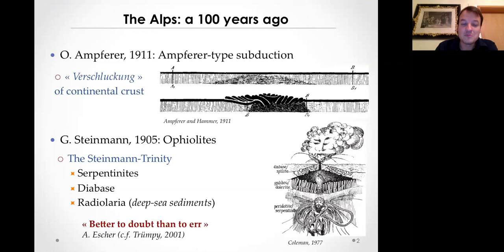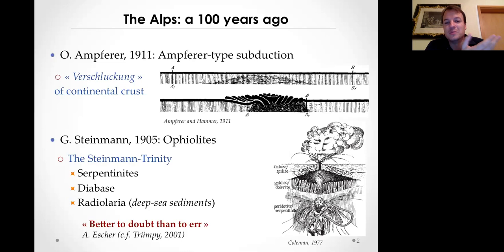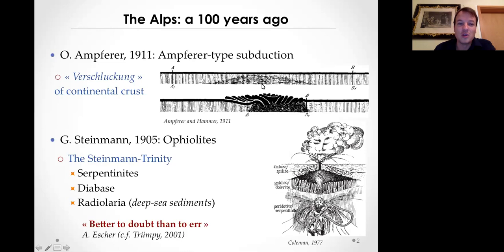Going quite a ways back in time, in terms of Alpine geology, a hundred years ago Alpine geologists had already solved quite a few problems. They already had interesting ideas, beginning with Otto Ampferer in 1911, who developed the first conceptual idea of what would be known as A-type subduction. By retro-deforming the Alps, it turns out that there was a piece of continental lithosphere missing - his idea of Verschluckung, meaning swallowing - basically the first idea of down-sucking or down-thrusting of continental lithosphere to great depth.